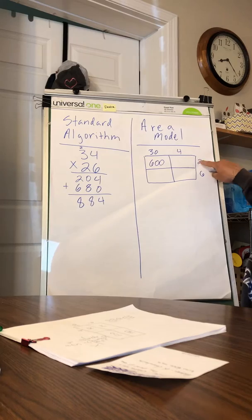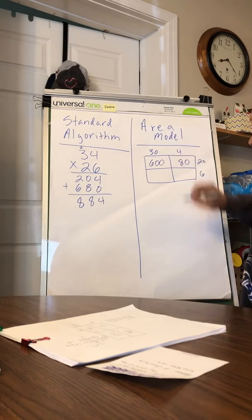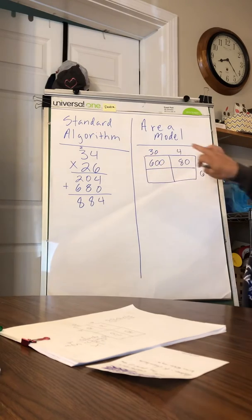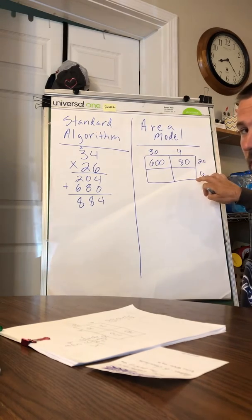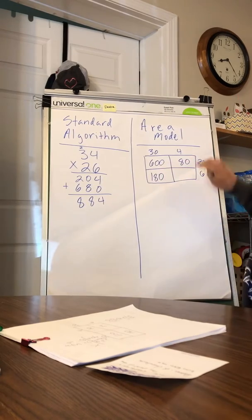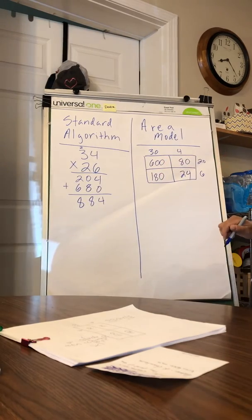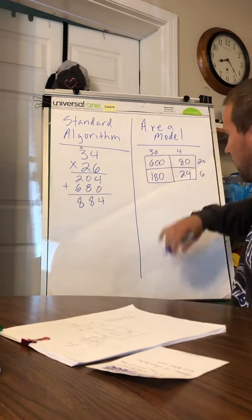Then I can do 30 times six. I know three times six is 18, so 30 times six is 180. And then I'm going to do four times six: 24. So now I've got my four partial products and I can add these up.